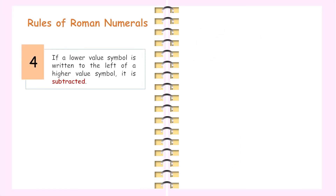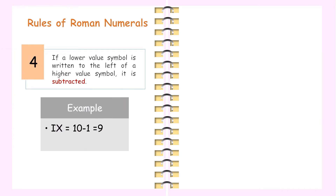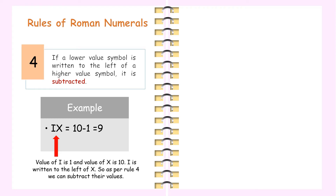Rule 4: If a lower value symbol is written to the left of a higher value symbol, it is subtracted. For example, 9 can be written as IX. The value of I is 1 and the value of X is 10. I is written to the left of X, so as per Rule 4 we subtract their values: 10 minus 1 equals 9.